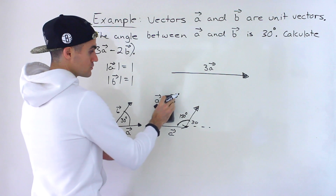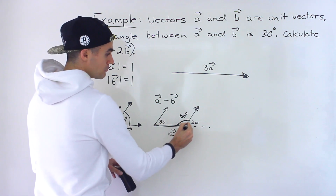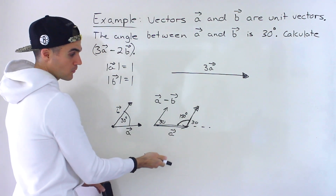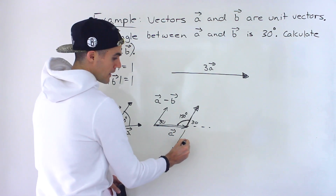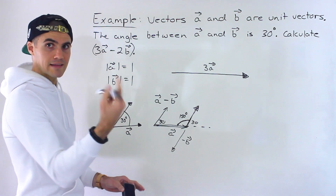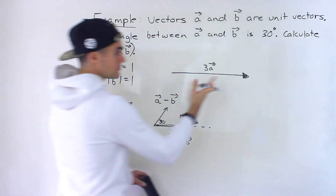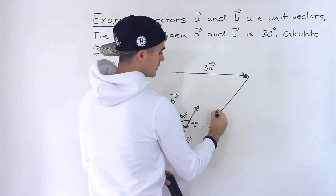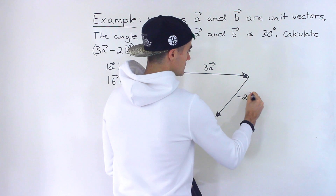Now that's if we add B, but what if we were to subtract B? If we're subtracting B, it's just going to go the other way. So instead of going this way, it's going to go this way. So this here would be minus B. And applying that intuition, for 3A minus 2B, the minus 2B is going to go this way — this is minus 2B.